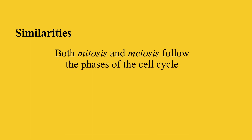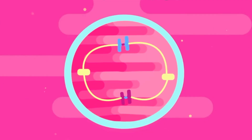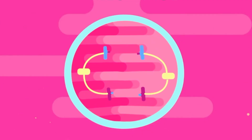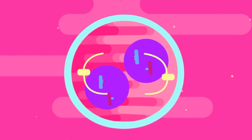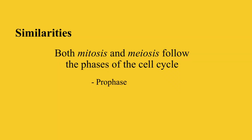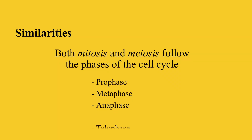Secondly, during both processes, cells undergo the same phases of the cell cycle. These phases are prophase, metaphase, anaphase, and telophase. Those are the two main similarities of mitosis and meiosis.